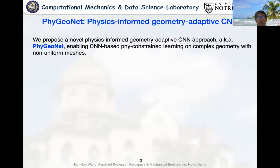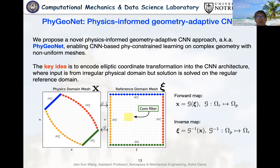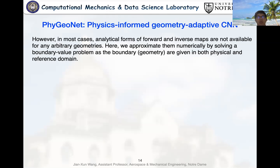To solve these problems, we propose a novel physics-informed geometry-adaptive CNN framework. We call it PhyGeoNet, which enables CNN-based physical constrained learning on irregular geometries with non-uniform meshes. The key idea is to encode the elliptic coordinate transformation into the CNN architecture, where the input is from irregular physical domain, but the solution is solved on the regular reference domain. Therefore, after this one-on-one coordinate mapping, we can use powerful classic CNN backbone to solve the problems. However, in most cases, the analytical form of the one-on-one mapping is not available for arbitrary geometry. Therefore, we turn to obtain the coordinate mapping numerically by solving a boundary value problem as the boundaries are given in both physical and reference domain.